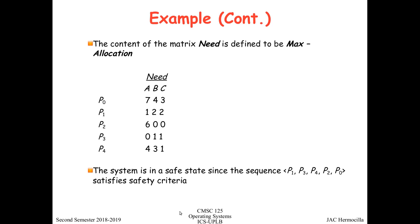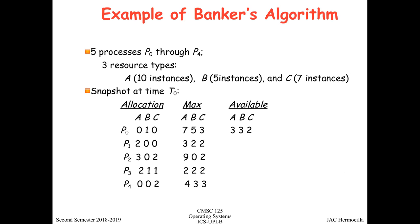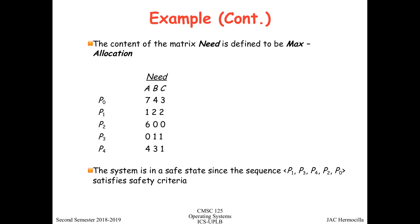Running the safety algorithm on this state, you can find a sequence of all processes in the system that satisfies the safety criteria. This means at time T0 the system is in a safe state, because a valid sequence exists that satisfies all resource requests for each process in order.